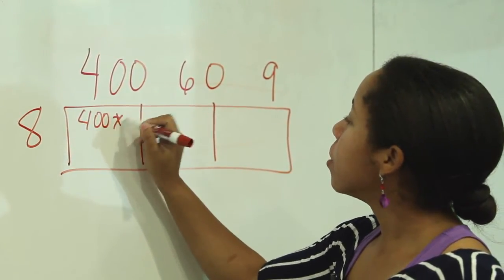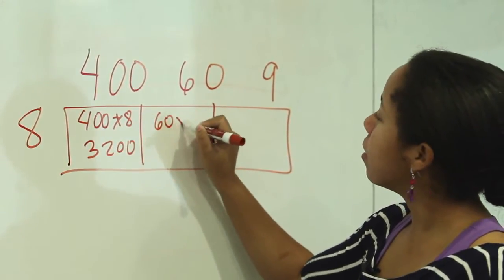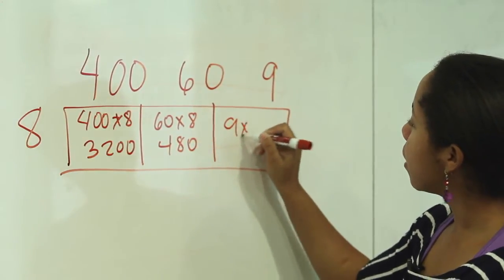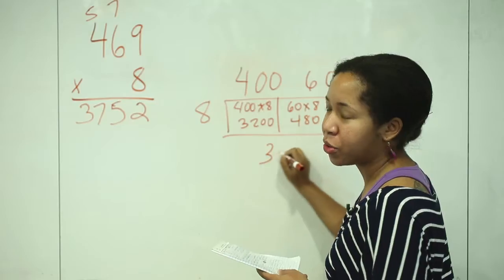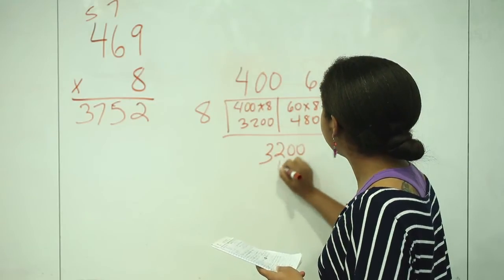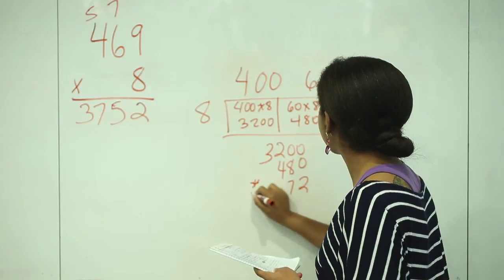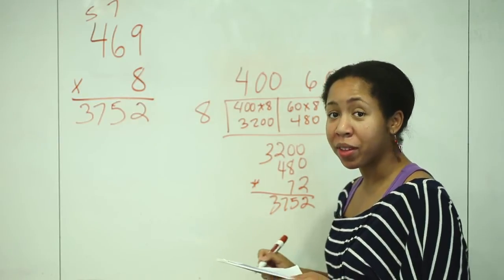400 times eight, 3200. 60 times eight, 480. And nine times eight, of course, is 72. You have a different method.